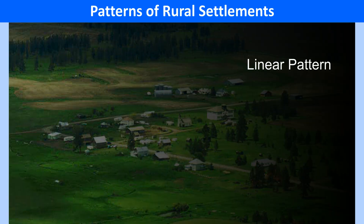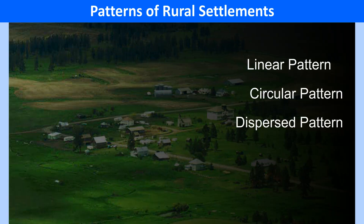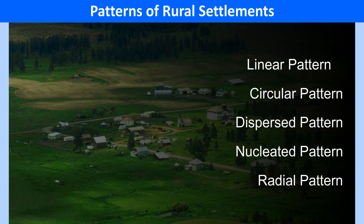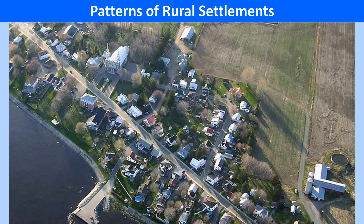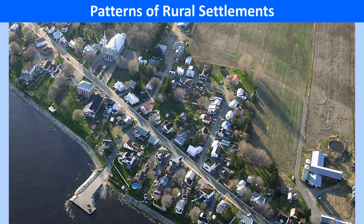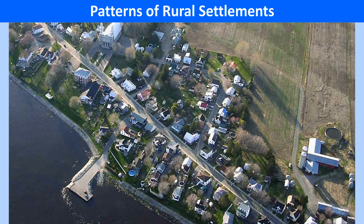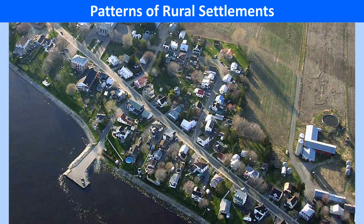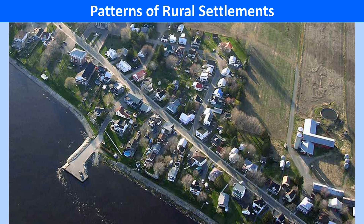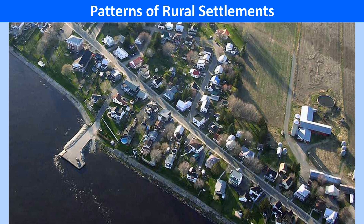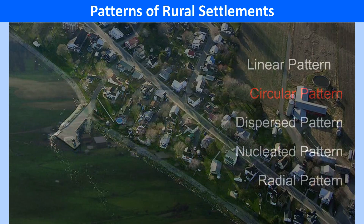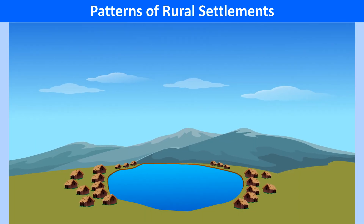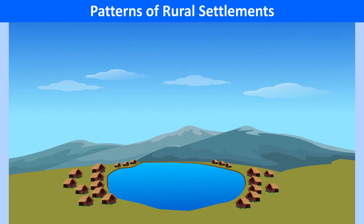Patterns of Rural Settlements. Rural settlements have five basic patterns or shapes: linear, circular, dispersed, nucleated and radial. Linear Pattern refers to those settlements that develop along a landform or human structure with a linear feature such as a river, road, railway track, canal or coastline in an elongated and narrow form. Circular Pattern — these settlements usually develop in a circular shape around a water body like a tank, lake, pond, oasis, etc.